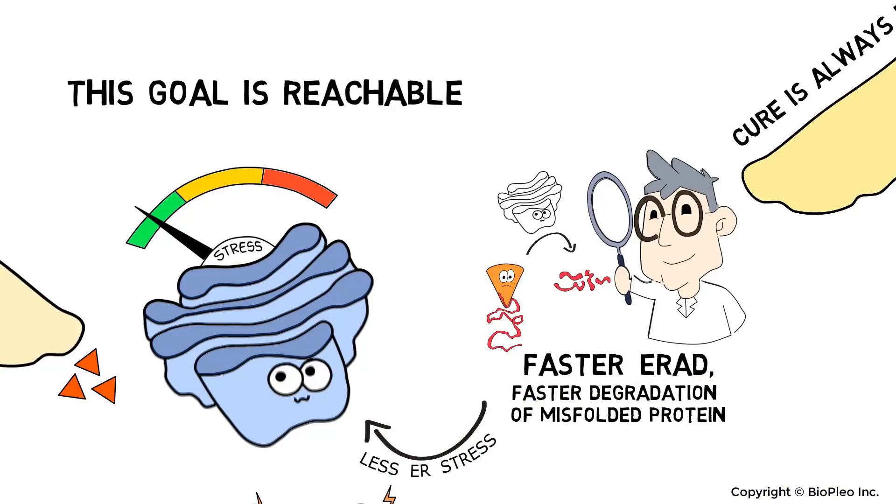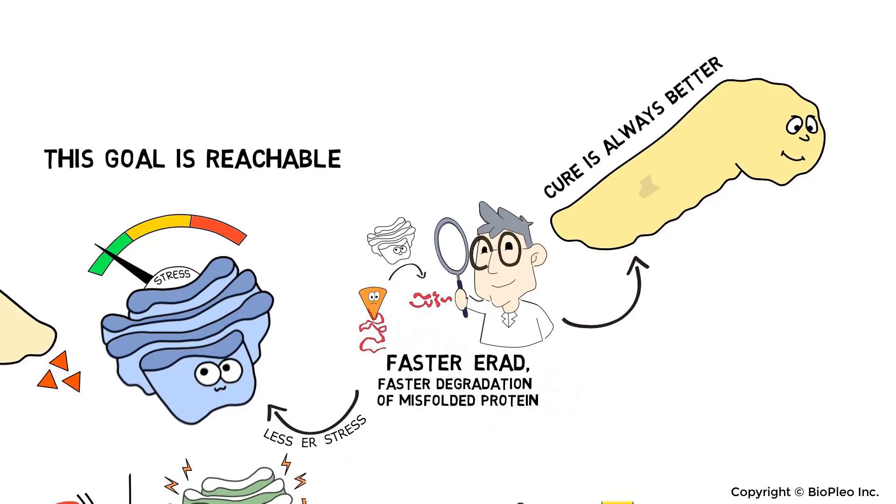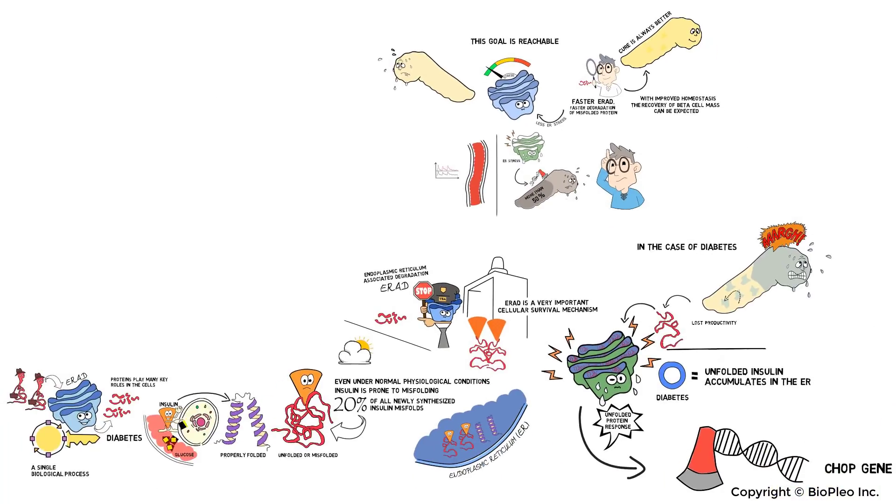...scientists believe that the relief of ER stress will effectively slow down beta cell death while the body is generating new and healthy beta cells. Eventually, with improved homeostasis, the recovery of beta cell mass can be expected.